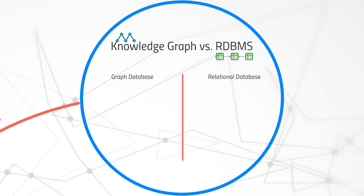The answer to that is it's down to the use cases and problems we're trying to approach. Graph databases have fantastic performance when it comes to the storage and retrieval of highly related data — data that is, in their very nature, intricately linked. They are optimized for that very purpose.